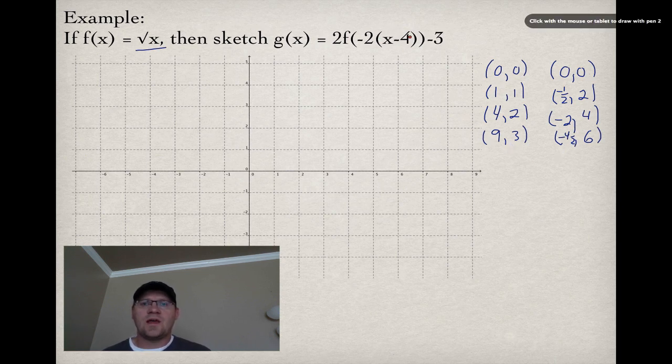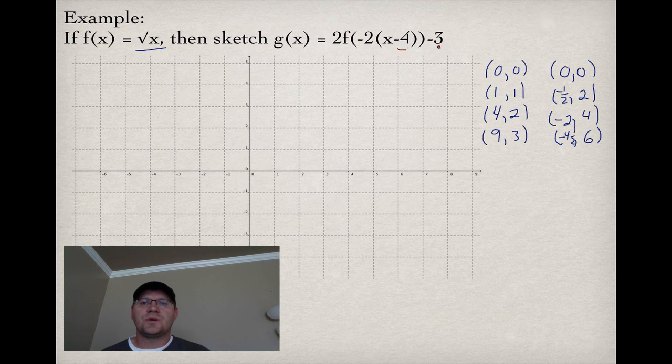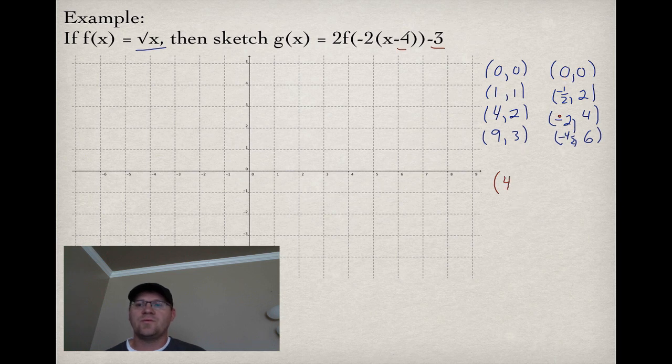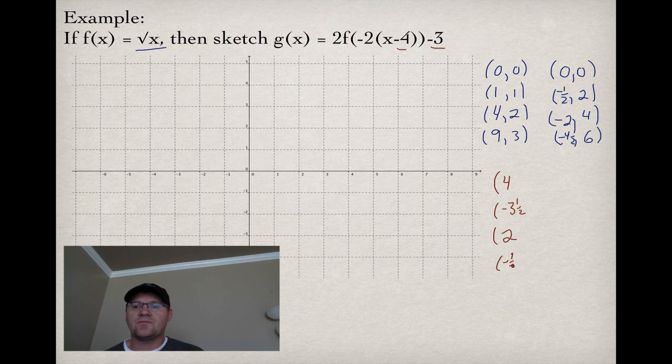Now we can apply the two translations. The horizontal translation, x minus 4, means it moves 4 units to the right. So all our x values are moving 4 units to the right. It was 0, it becomes 4. It was negative half, it becomes 3 and a half. This was negative 2, it becomes positive 2. And this was negative 4 and a half, it becomes negative half.